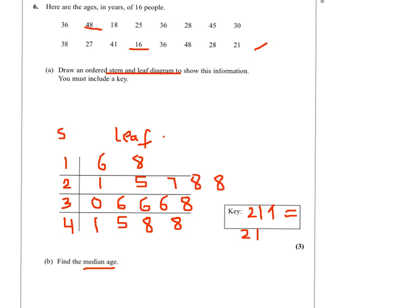Now I need to work out the median. The median is given by, we got 16 data values so 16 plus 1 divided by 2. That is 8.5 value and when you look at your set of data it